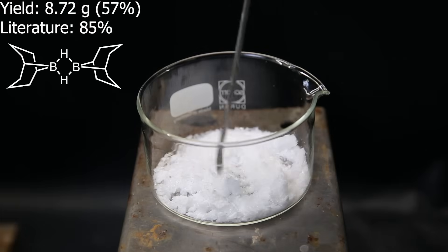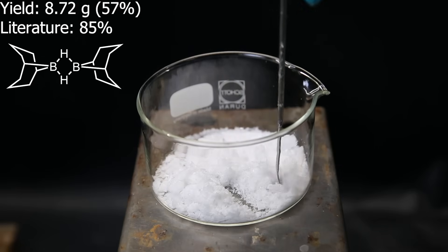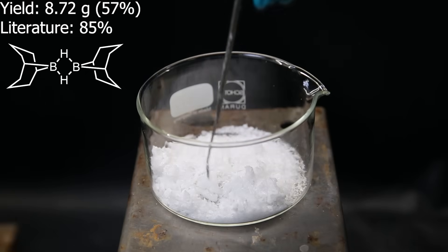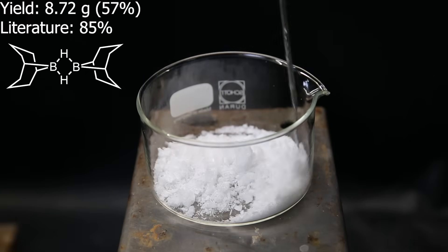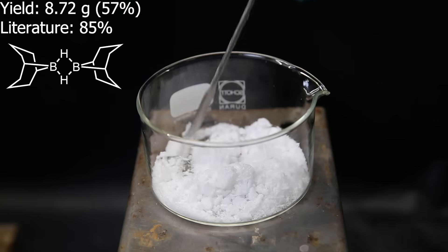The yield turned out to be 8.72 grams, which is 57%. This is lower than the literature, but I didn't do the procedure in an inert atmosphere and didn't recover all of it from the flask. I also used a little bit more volume of the solvent. Anyhow, now that I have the 9BBN, I can move on with the next step, which is making the alpine borane.